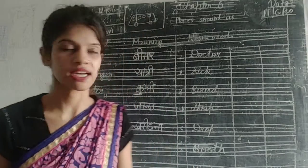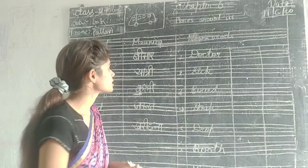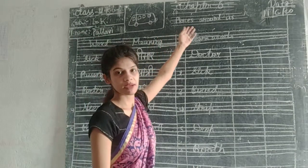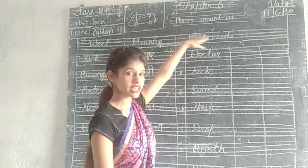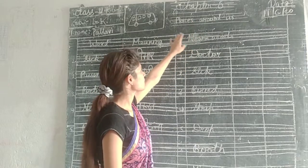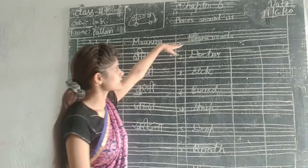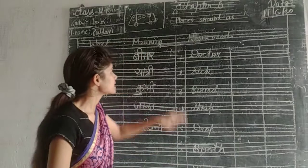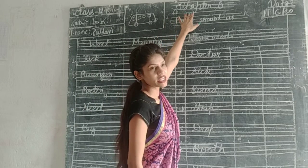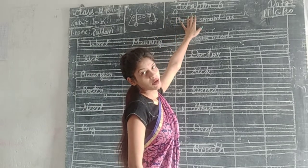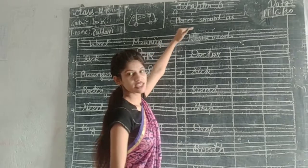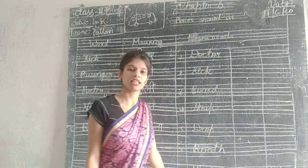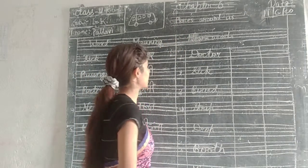Now we are going to see how to write in the copy. As you always write, we will put a chapter on top. Chapter is our 6. We will put 'Places Around Us,' which is our chapter's name. Chapter 6 will be lined with the help of a scale. After that you will put 'Places Around Us,' which will be lined with the help of a scale.